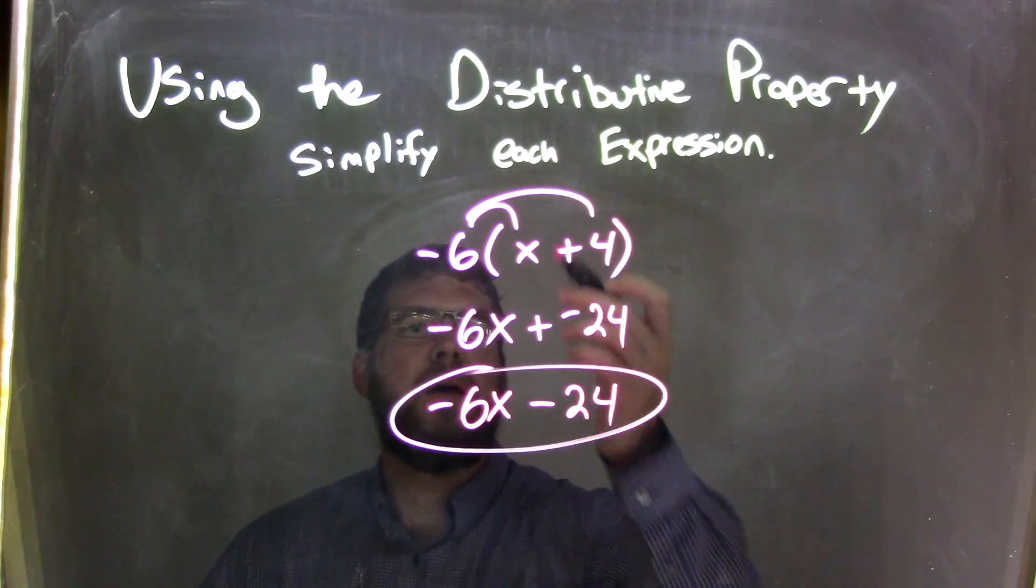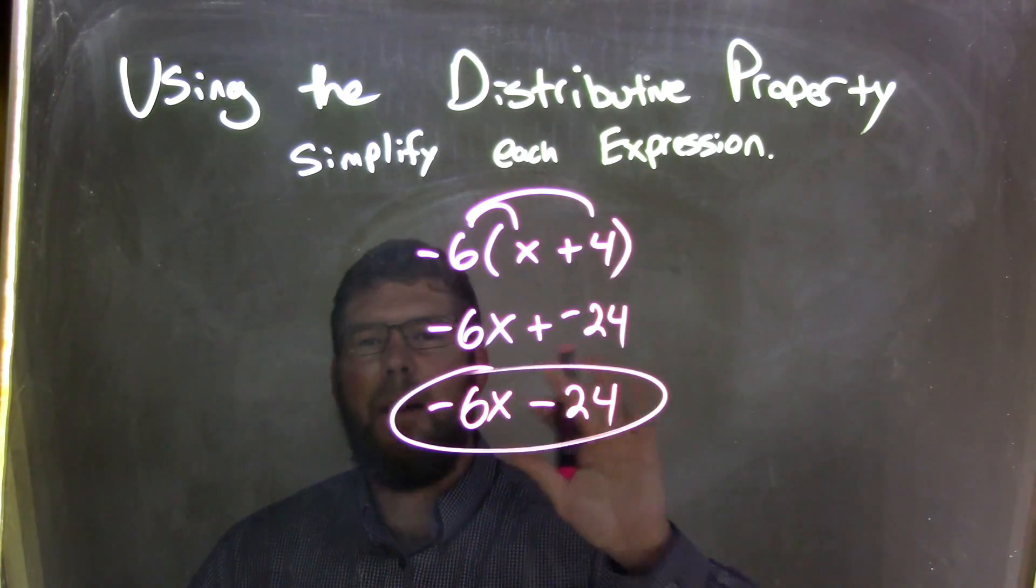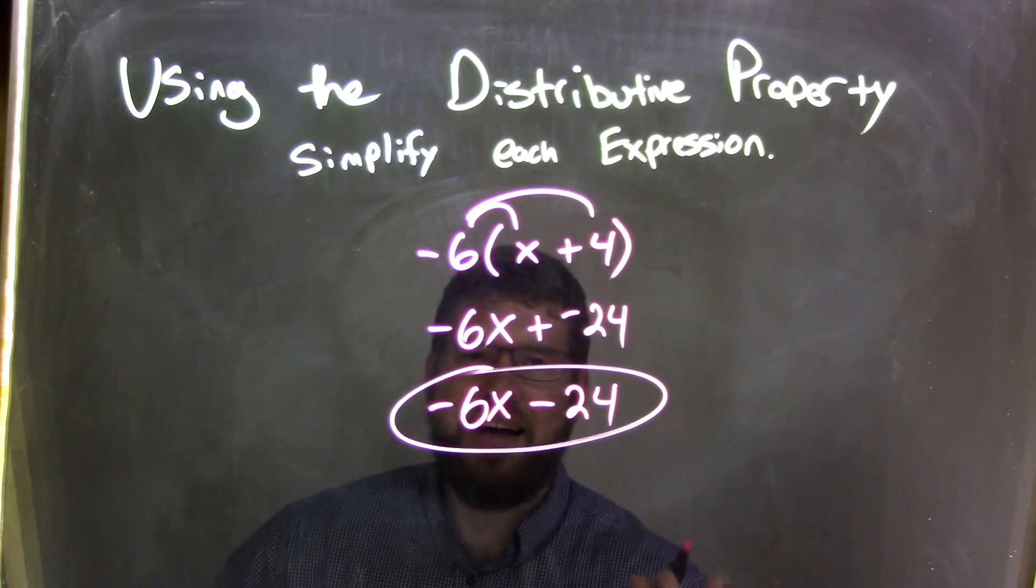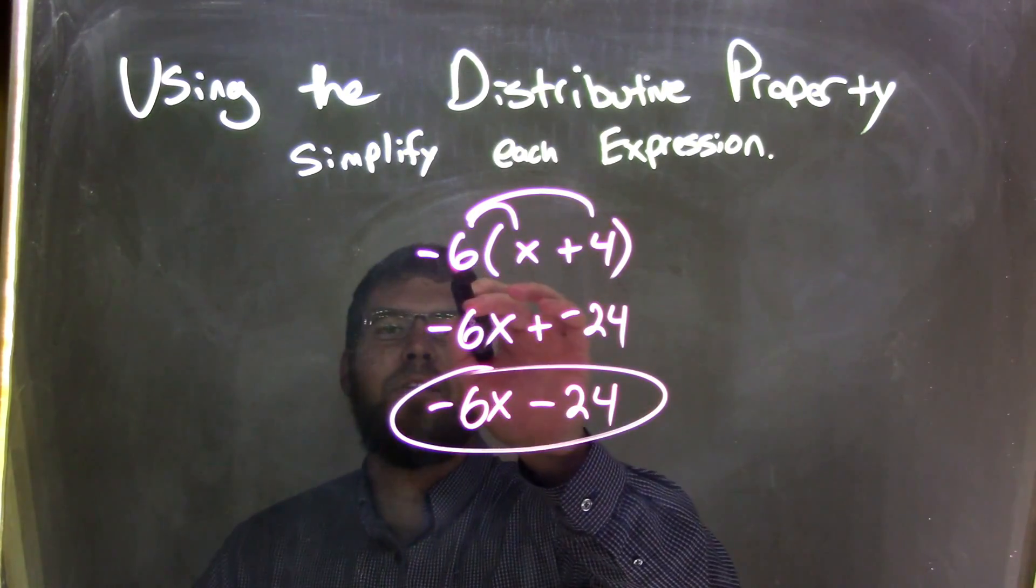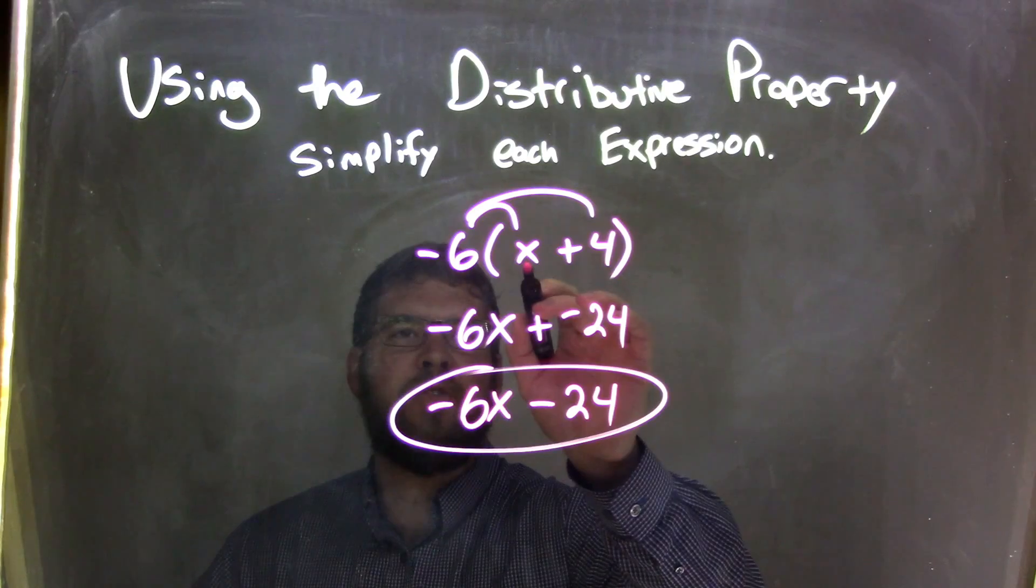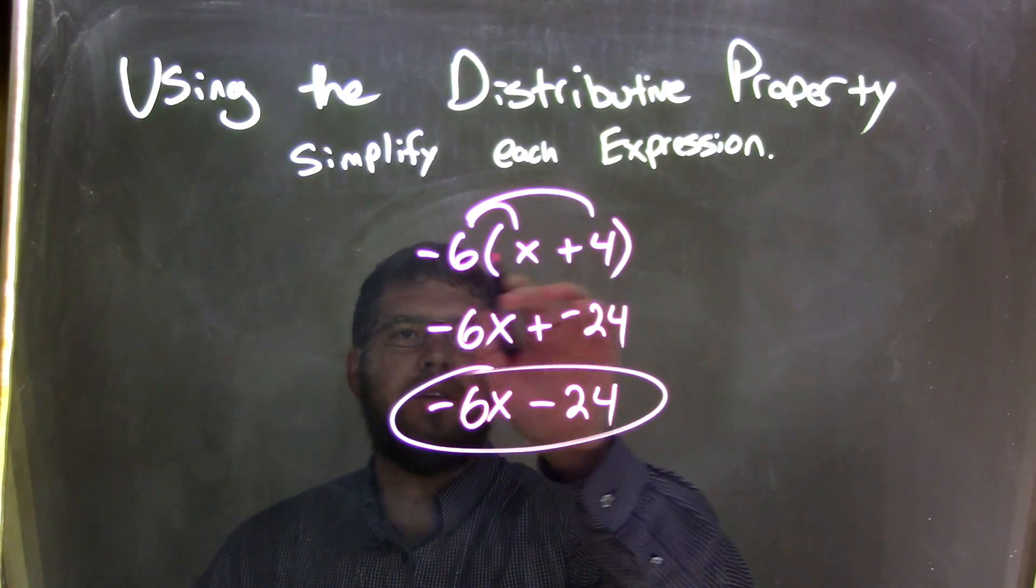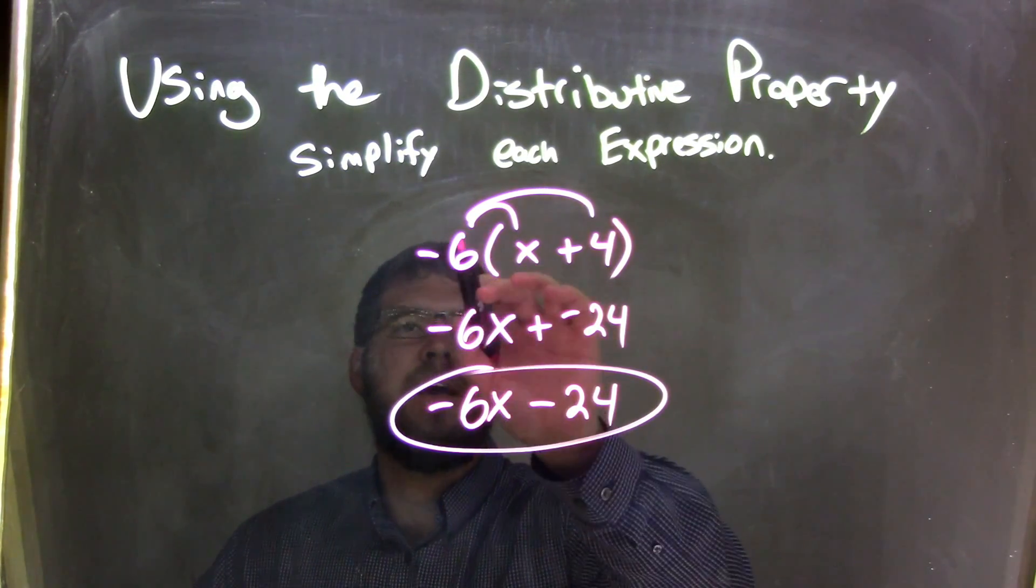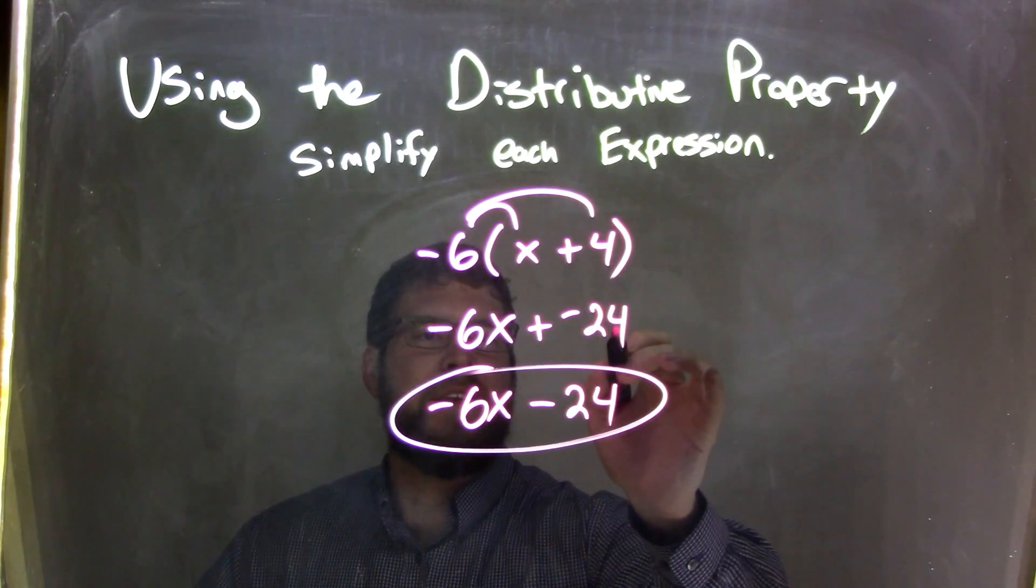Again, let's recap. We have x plus 4 inside the parentheses, but they're not like terms. Cannot combine them. We bring in the negative 6 on the outside. We multiply it by x first. We distribute that. Negative 6 times x is negative 6x, and negative 6 times 4 is negative 24.